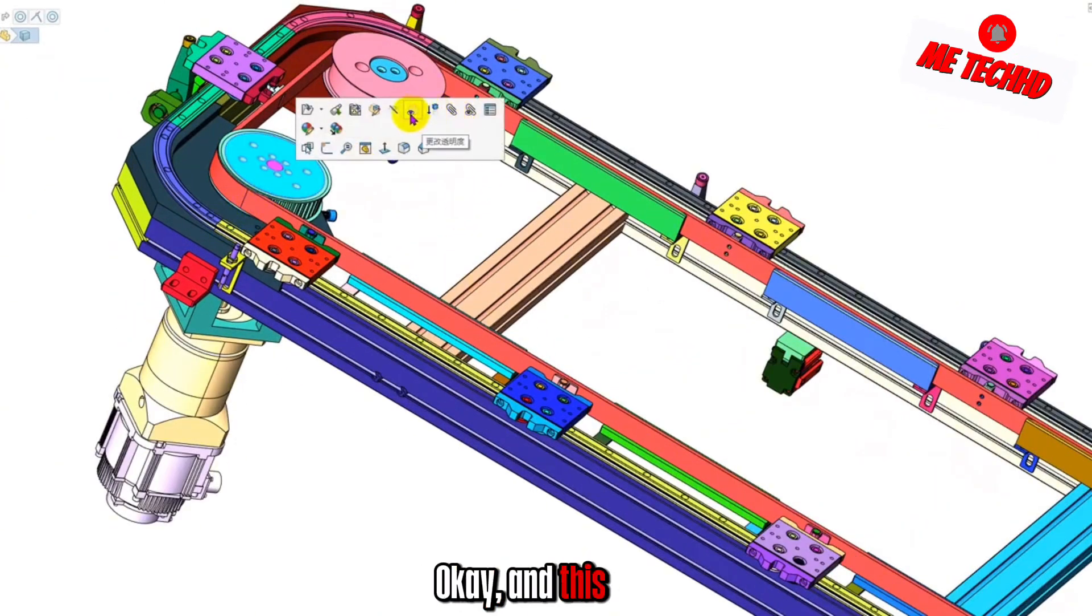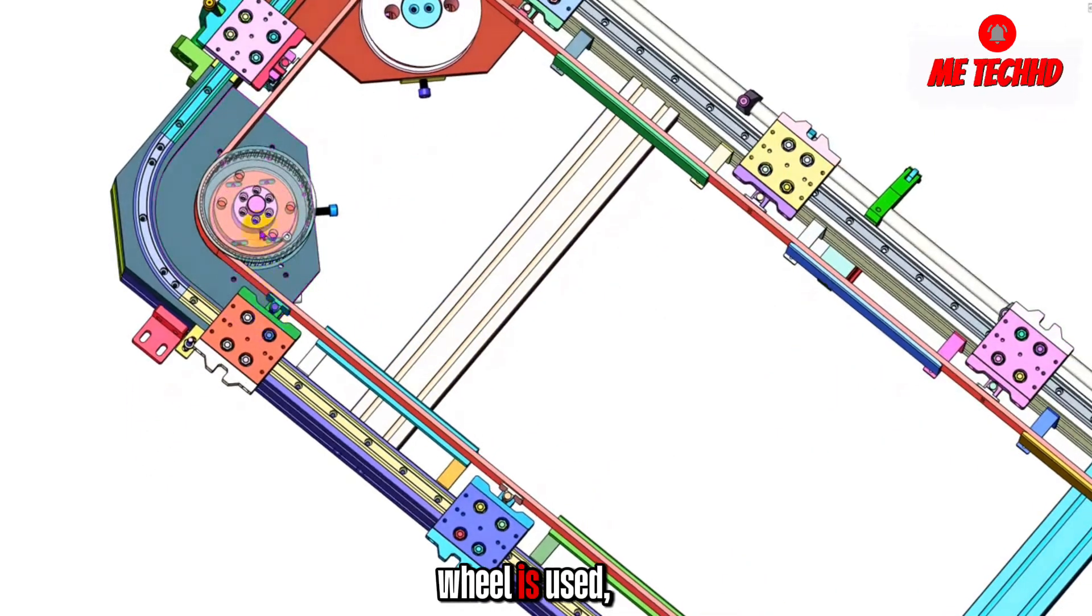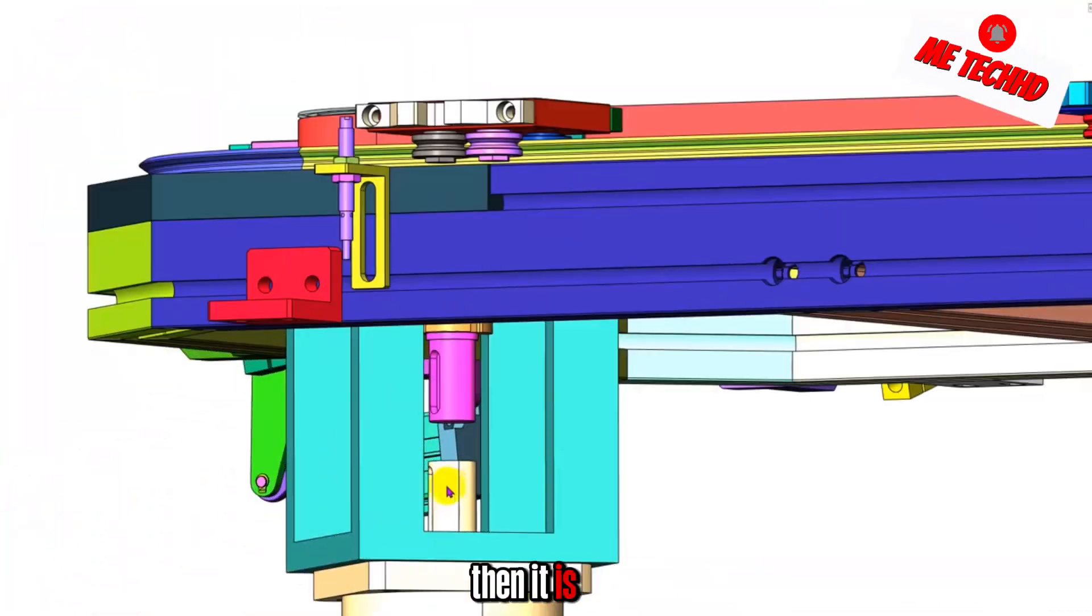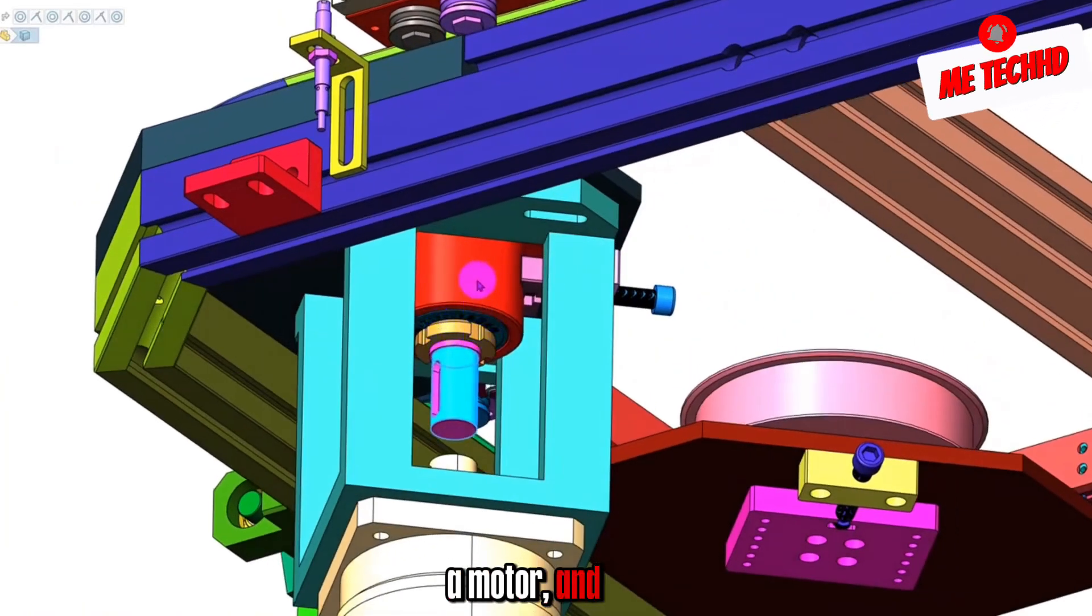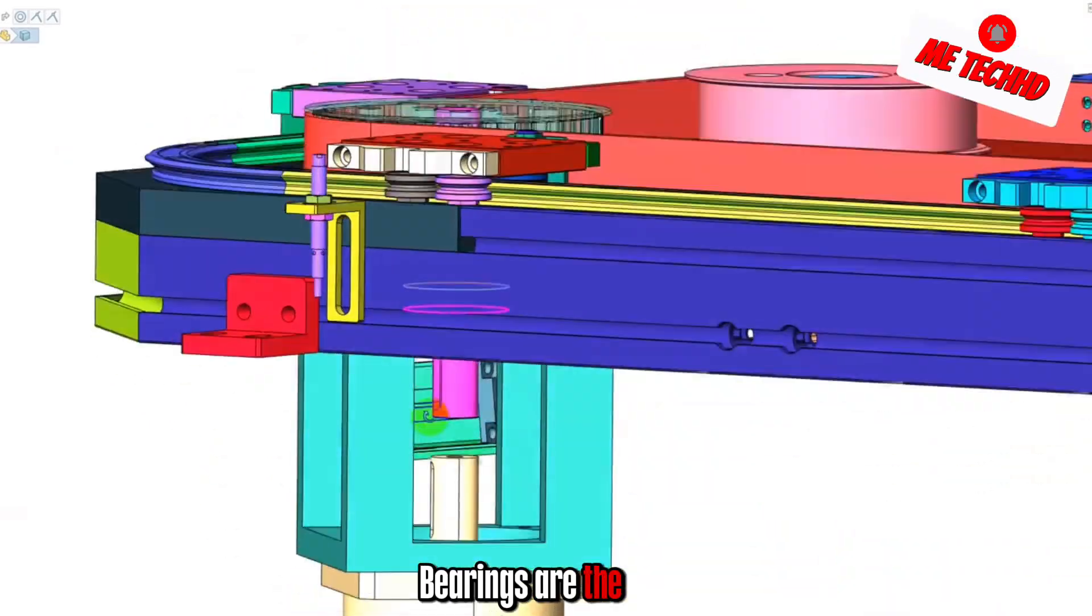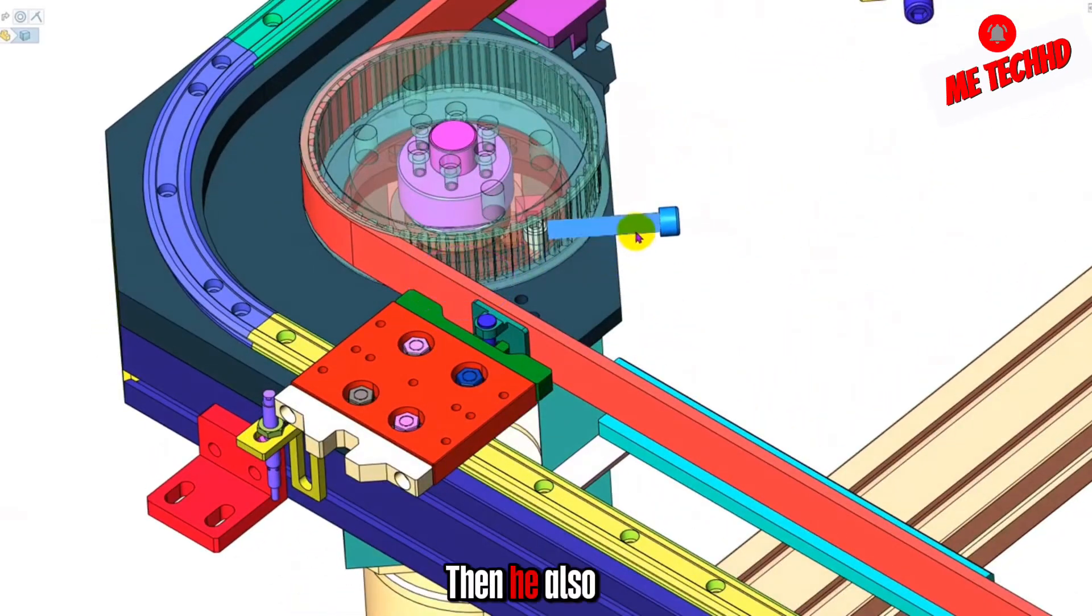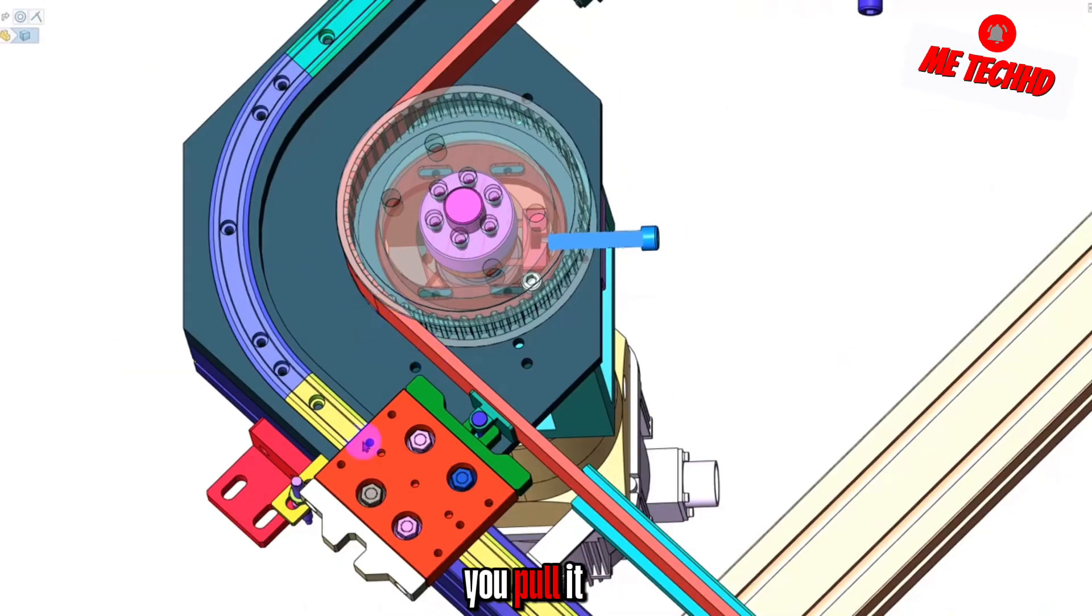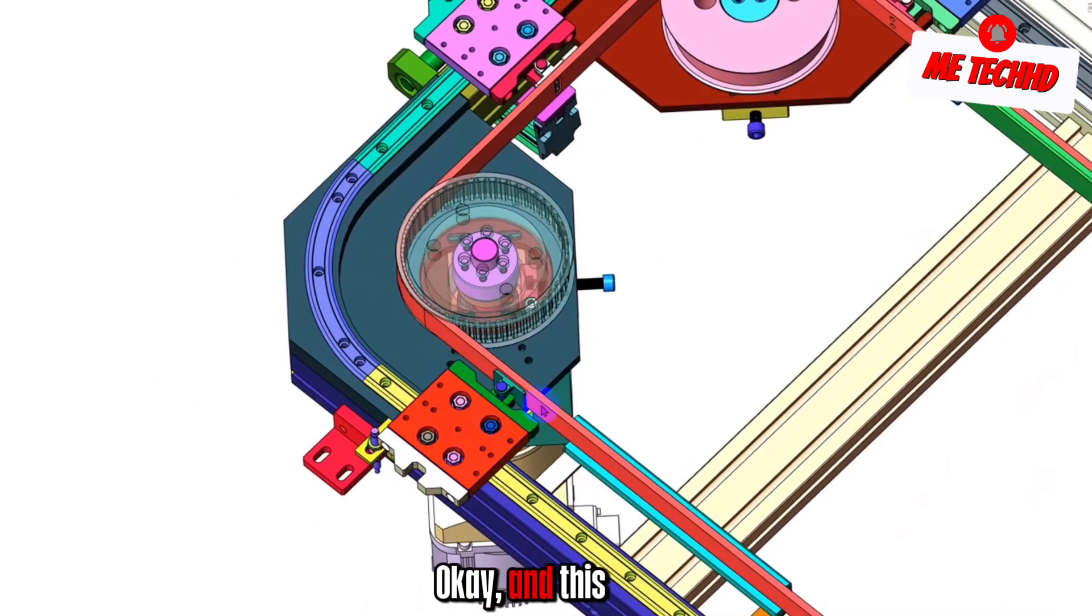And this position is the driving wheel. If the driving wheel is used, it can be directly connected to our motor. This is a motor. And then it is connected through a coupling. Then this position is a bearing inside. Bearings are the same. Then he also made an adjustment here. You can tighten it even if you pull it back. It can also be tightened.